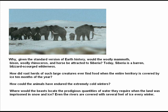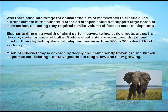Today, Siberia is a barren, blizzard-scourged wilderness. How did vast herds of such large creatures ever find food when the entire territory is covered by ice 10 months of the year? How could the animals have endured the extremely cold winters? Where would the beasts locate the prodigious quantities of water they require when the land was imprisoned in snow and ice, and even the rivers are covered with several feet of ice every winter?